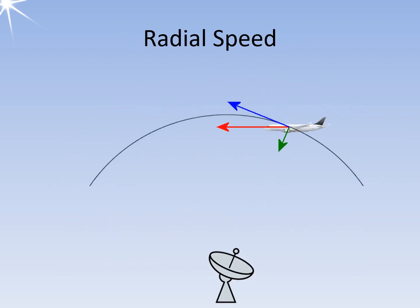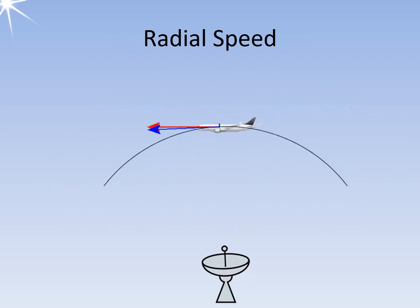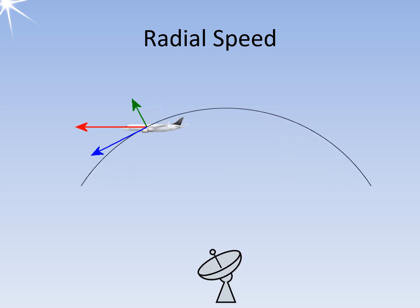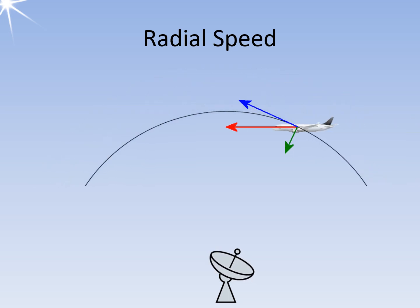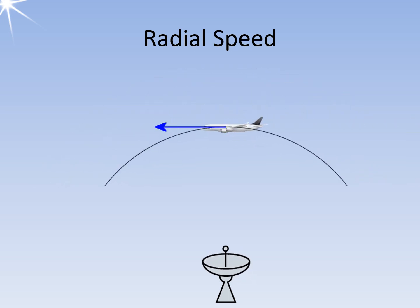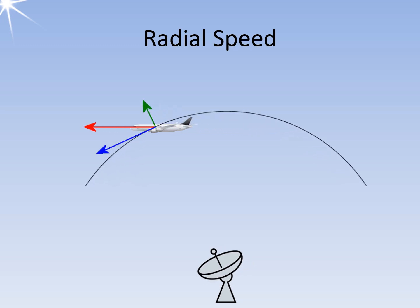In the graphic, the aircraft's ground speed is represented by the red arrow. This velocity vector can be broken down into two partial vectors: radial speed, in green, and tangential speed, in blue. The Doppler frequency measurement can only be obtained using the radial speed.